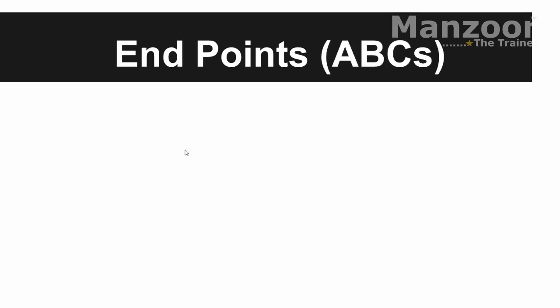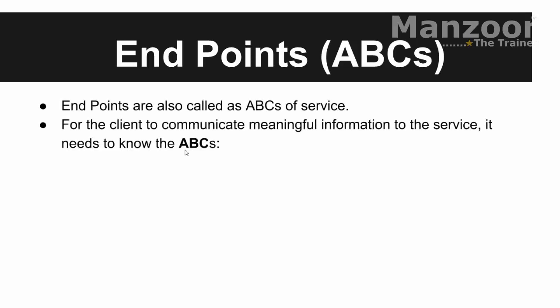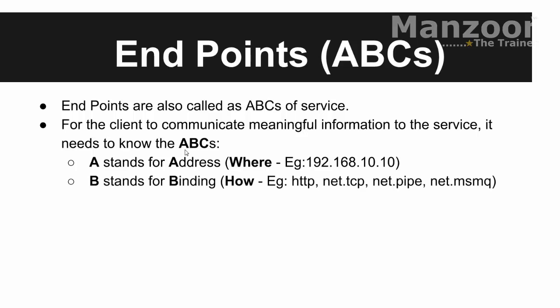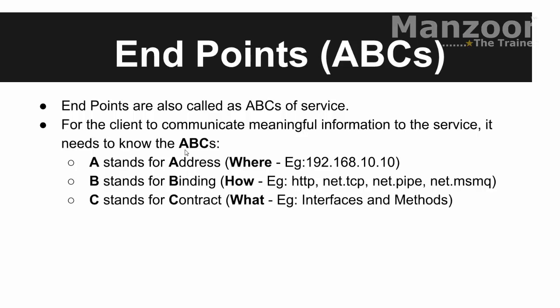C stands for Contract — what they want to communicate. So: A is Address (where), B is Binding (how), C is Contract (what). Endpoints are also called the ABCs of the service. For the client to communicate meaningful information to the service, it needs to know the ABCs: address, binding (HTTP, TCP, named pipe, or MSMQ), and contract — which is nothing but interfaces and methods defining what information the service shares. We'll see the practical implementation of endpoints in our next video. Thank you.